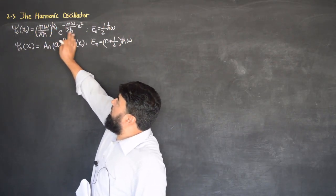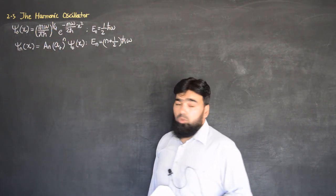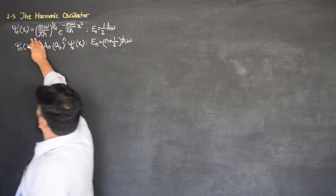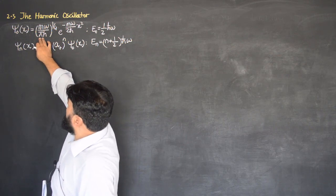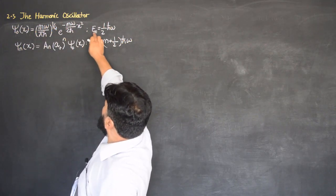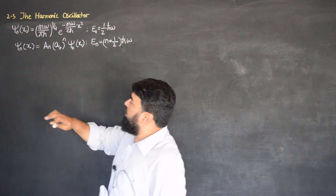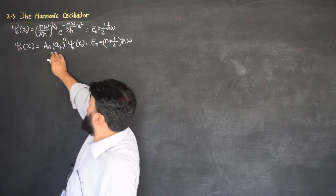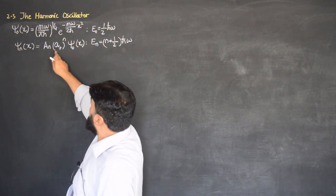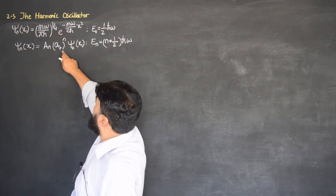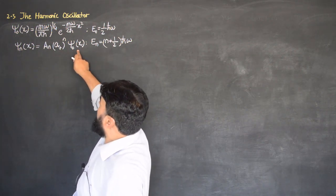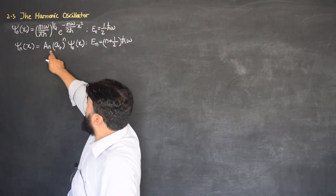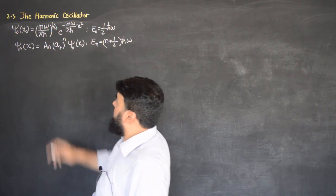In the previous lecture on the harmonic oscillator (section 2.3), we derived the ground state wave function with energy ½ħω. We then anticipated that the nth wave function will be obtained by repeatedly applying the raising operator a₊ on ψ₀, giving another wave function with its own normalization constant.